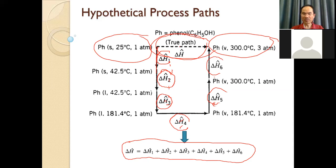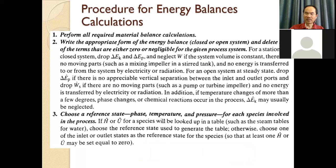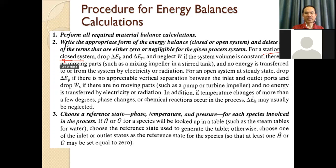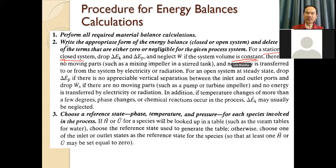For the general equation for the energy balance, the first step is to perform the material balance — check whether the material is balanced. If it is balanced, write the appropriate form of energy balance for closed or open system. Then cancel any terms that are either zero or negligible. For example, for a stationary system, you can cancel delta Ek and delta Ep — no kinetic energy, no potential energy. If the system volume is constant, we can also cancel work.